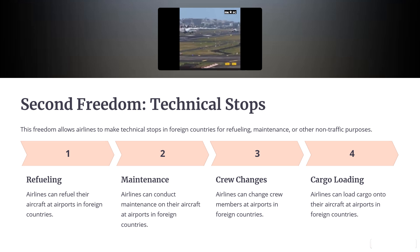Under the Second Freedom, airlines can refuel their aircraft at airports in foreign countries, conduct maintenance on their aircraft, change crew members, and load cargo onto their aircraft at airports in foreign countries.